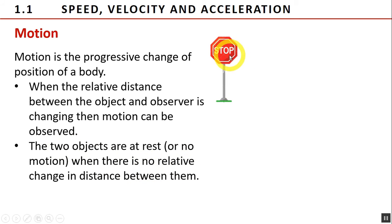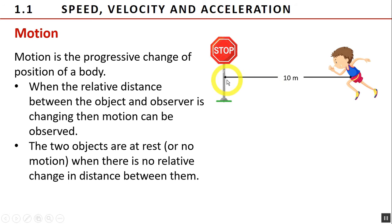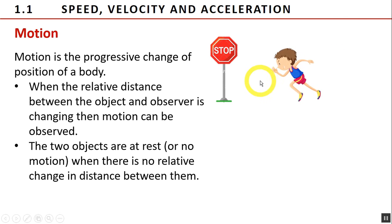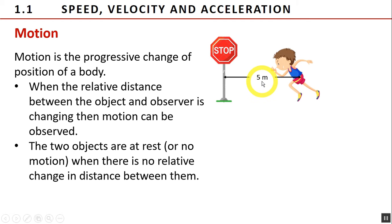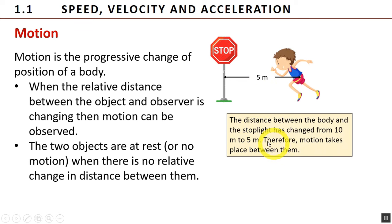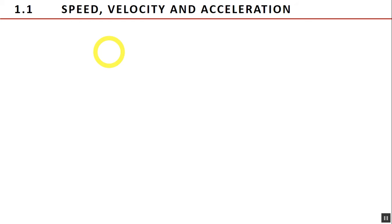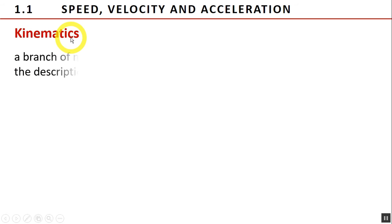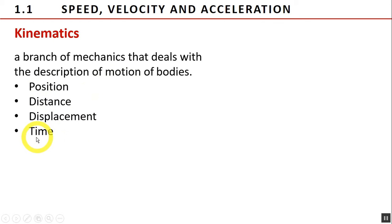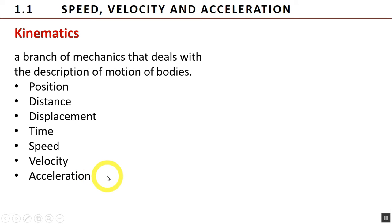To illustrate this, consider a stop sign and an athlete. Initially, at a particular time, the athlete is 10 meters away from the stop sign. If he gets closer to the stop sign — let's say his distance becomes 5 meters — therefore we can say that motion takes place between them. The phenomenon of motion can be learned by studying kinematics, a branch of mechanics that deals with the description of motion of bodies. It involves various physical quantities such as position, distance, displacement, time, speed, velocity, and acceleration. These quantities are related to other quantities such as force, work, and power, which will be discussed in Unit 2.